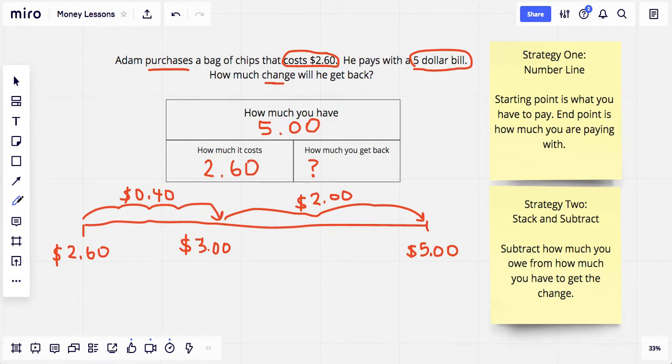So now if I look at these values of our number line and counting on, this represents, in the green circles, the change that Adam gets back. So how much in total should Adam receive? That's right. Adam should be getting back, as change, $2.40. Adam should be getting back $2.40.